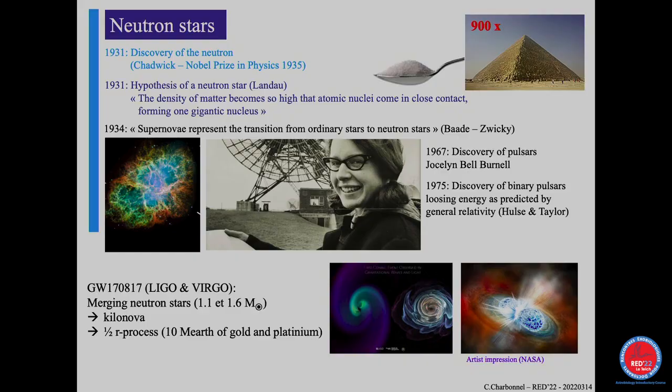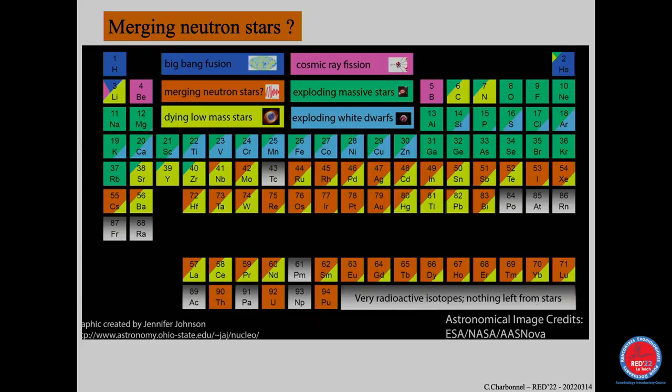Later, binary pulsars were discovered, and more recently we had the first evidence of two neutron stars merging through gravitational wave experiments — the LIGO and Virgo experiments, which search for gravitational waves from mergers of neutron stars, black holes, and supermassive black holes. This kilonova was discovered a few years ago, and it was proposed that it is during such mergers that heavier elements like gold and platinum are made. When you merge neutron stars, you can populate that part of the periodic table and compete with the low-mass stars during the AGB phase.